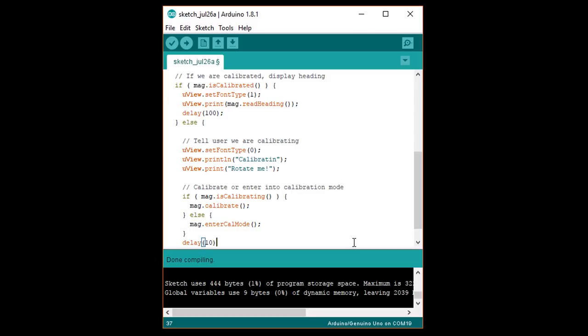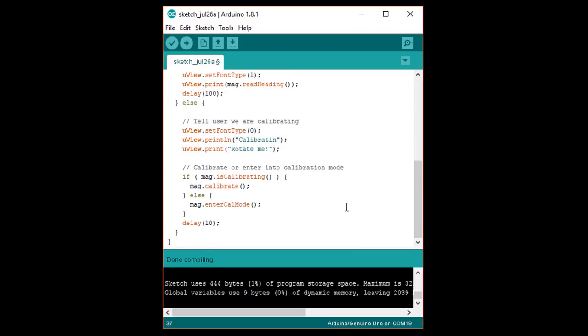If the software library has not been calibrated, then it will enter into calibration mode where mag dot calibrate needs to be called on every iteration of loop. Note that I said software library, as the offsets and scalings derived from calibration are stored on the microview. That means if we cut power to the microview, it will need to run through calibration again.